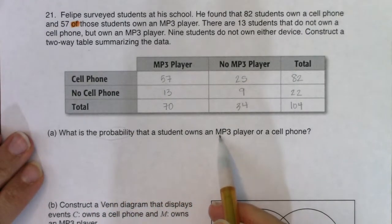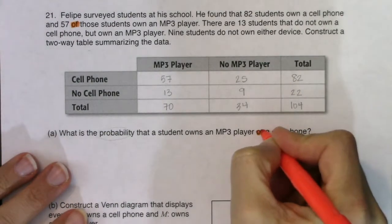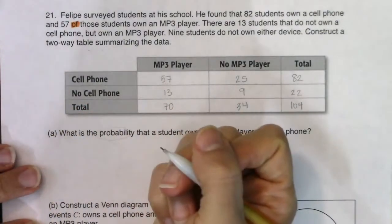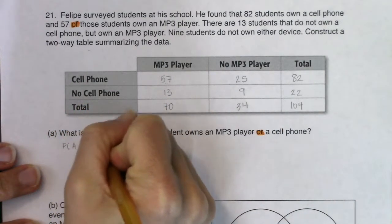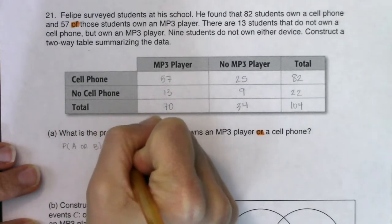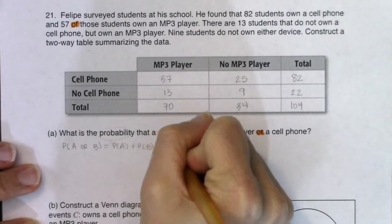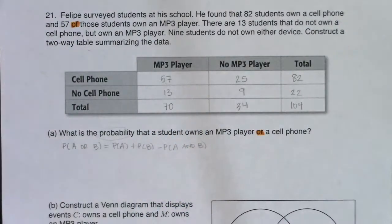What is the probability that a student owns an MP3 player or a cell phone? I see the word 'or,' so I think: Formula 1. The probability of A or B equals the probability of A plus the probability of B minus the probability of their overlap.